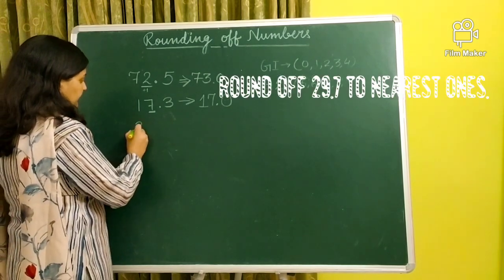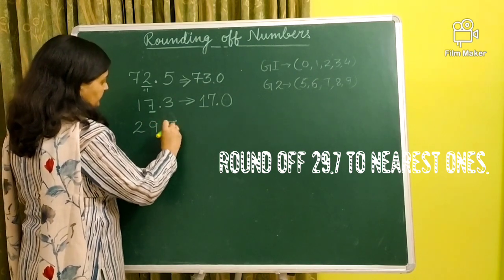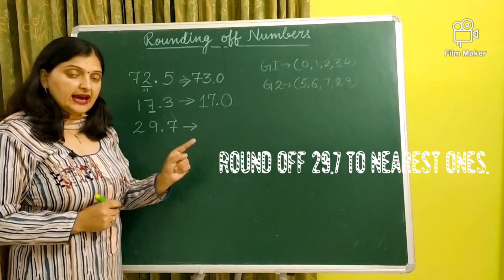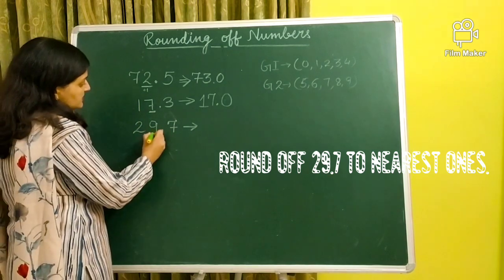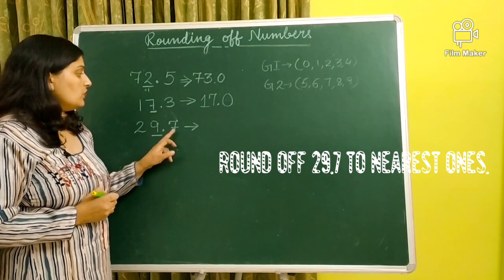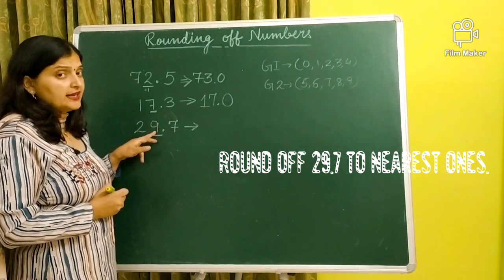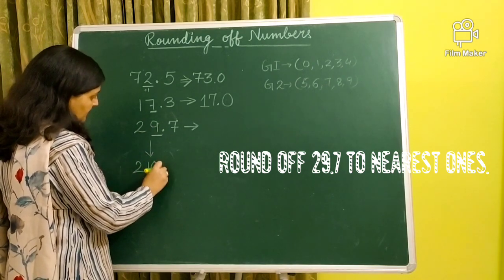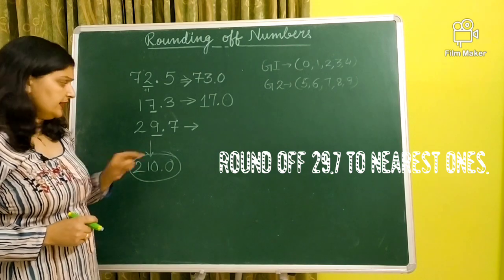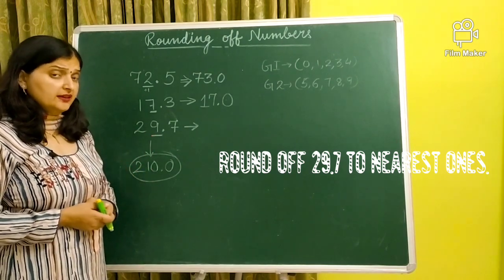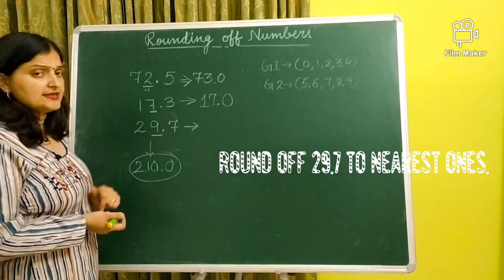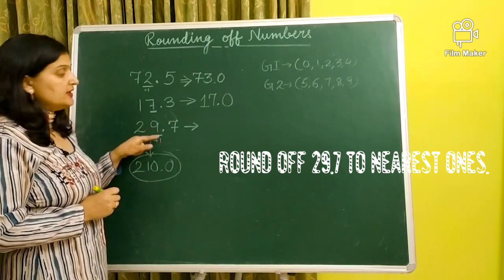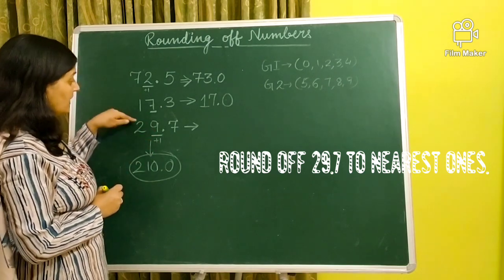Let us take one more example. 29.7. Now this question you have to look carefully. Round 29.7 to nearest ones. Nearest ones means you underline nine. Compare with seven. If we compare seven, then we have to add one to nine. Now, you might think you will write it like this. Two as it is, nine plus one is ten, and then zero. 210. So, you think yourself, can 29 be near 210? No. 29 will be near which number? Thirty.